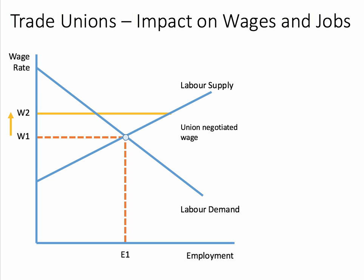In our diagram, the union has negotiated a wage of W2, and that can now be introduced into the analysis diagram. For those people who have a job and are members of a union, they're going to get a higher wage — they're going to get paid W2. However, ceteris paribus, the level of employment will contract from E1 to E2.